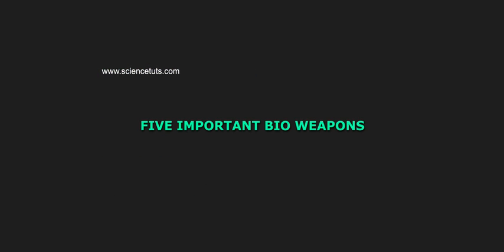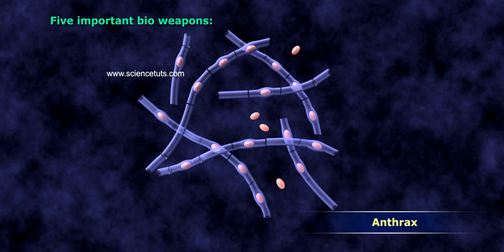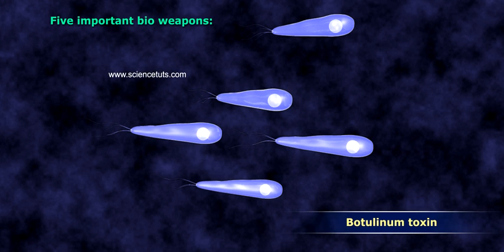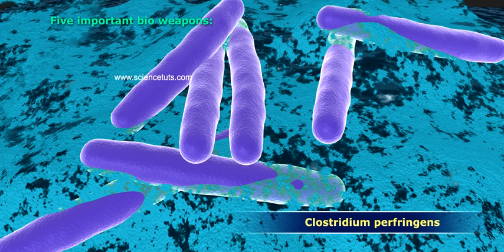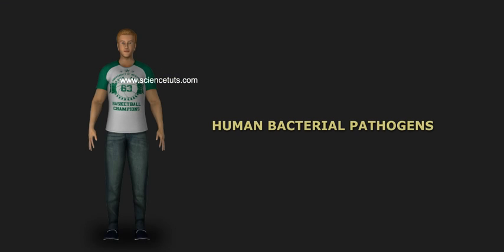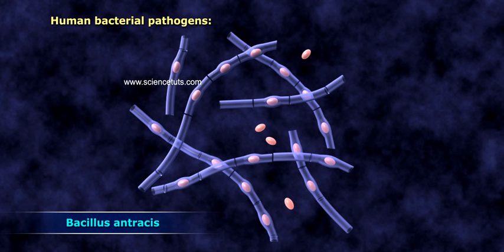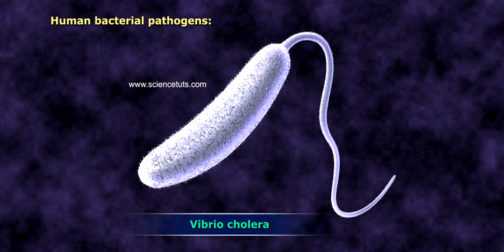Important bioweapons include Smallpox, Anthrax, Botulinum Toxin, Aflatoxin, and Clostridium perfringens. Human bacterial pathogens include Bacillus anthracis, Clostridium perfringens, and Vibrio cholerae.